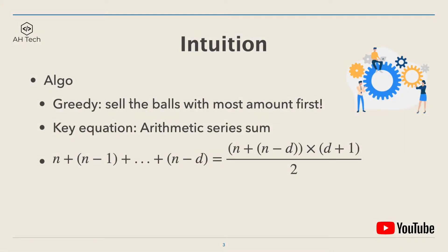The intuition to solve this question: the key algorithm is a greedy approach. We want to sell the balls with the most amount first in order to gain the highest value. The key equation to calculate the total value is the arithmetic series sum, which is the sum of n plus (n minus 1) plus all the way down, divided by 2. We will see how this equation comes into play with the algorithm.